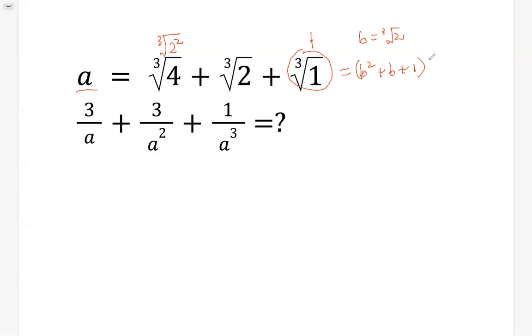Maybe we want to do this: we want to multiply by b minus 1 on both sides. And b is cubic root of 2, minus 1 on both sides.